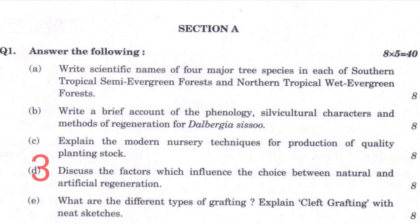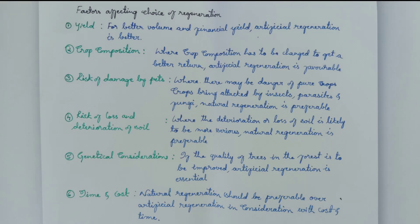The third question asks to discuss the factors which influence the choice between natural and artificial regeneration. The factors based on which we can decide whether to choose natural or artificial regeneration are: yield, crop composition, risk of damage by pests, risk of loss and deterioration of soil, genetical considerations, and time and cost.